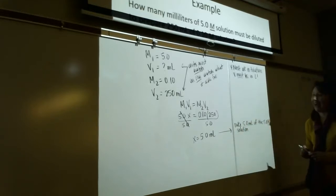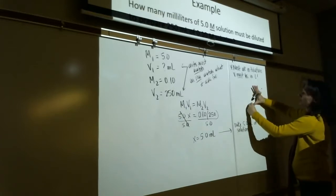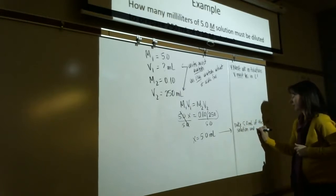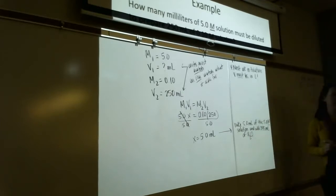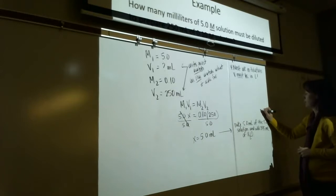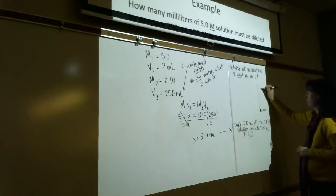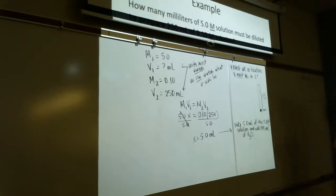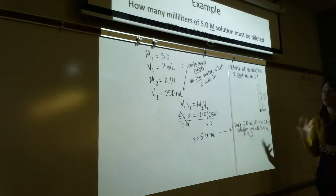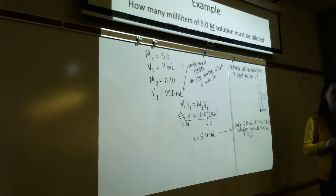So you take 5.0 mL of the 5 molar concentrated solution and add enough water to make the total volume 250 mL — that means adding 245 mL of water. The solution will be noticeably lighter in color after dilution. You can solve for any one of the four variables M₁, V₁, M₂, or V₂ as long as you list out your variables, watch your units, and the arithmetic itself is just multiplying or dividing.